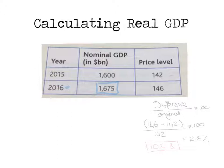We know what the nominal GDP is in 2016. So all we simply do is we get this number, divide it by 102.8, times it by 100, and what we should get is 1629.3.